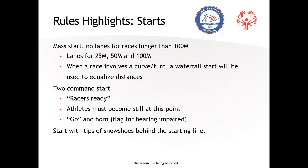Races longer than 100 meters will be mass start. We'll have lanes for 25, 50, and 100 meter on the near side of the track — straightaways with lane lines. Anything longer constitutes a loop. Races longer than 100 meters will have a waterfall start to equalize distance for athletes on the outside. Two commands to start: 'Racers ready' and 'Go.' We'll also have a red-and-white flag for those with hearing impairment.